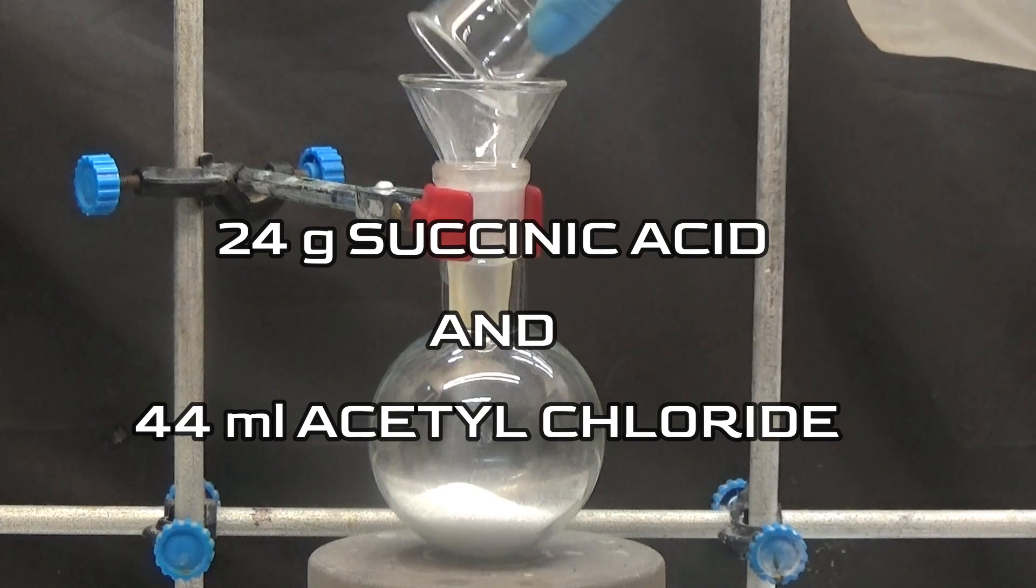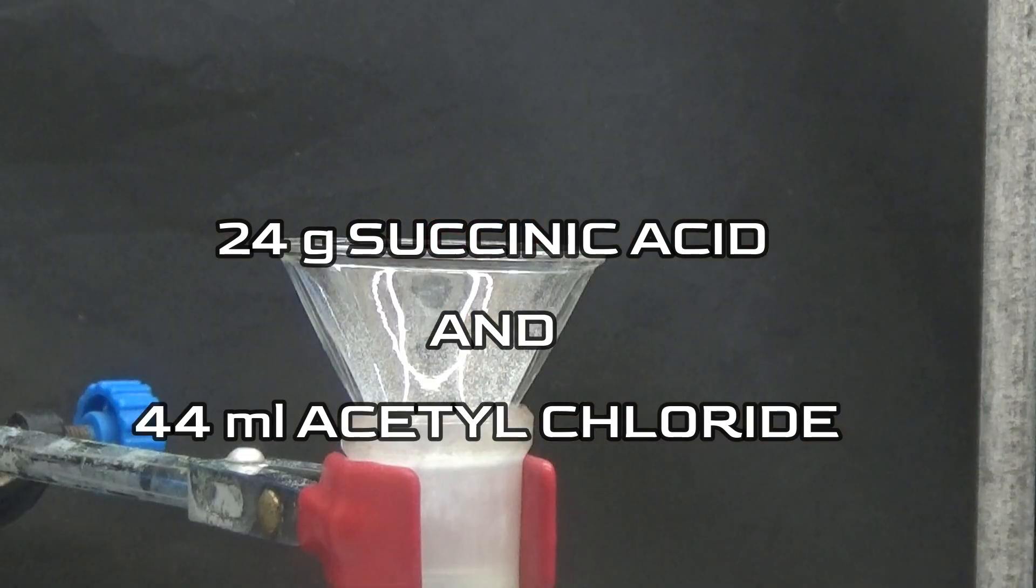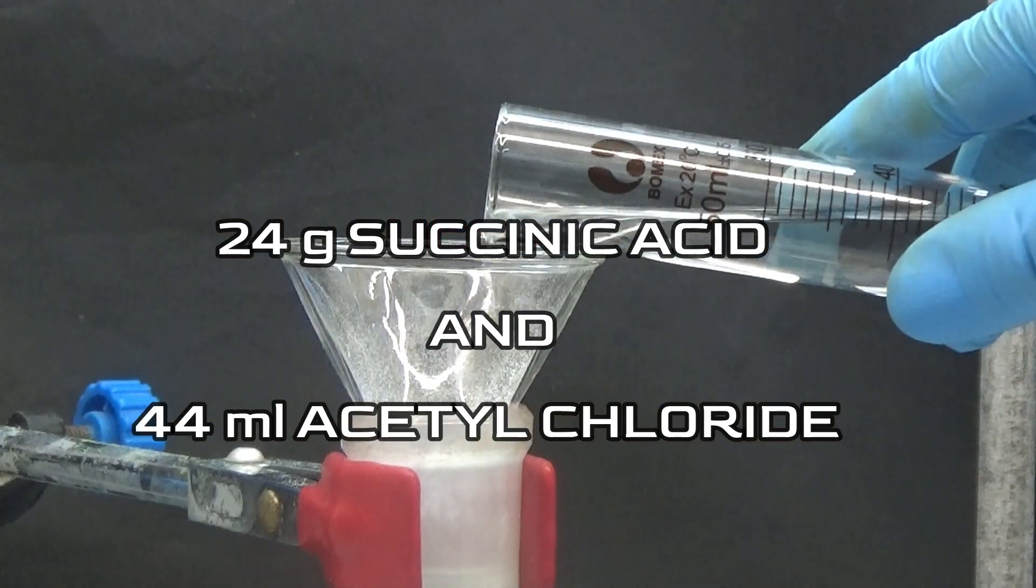In a 250 milliliter flask, add 24 grams of succinic acid and 44 milliliters of acetyl chloride.